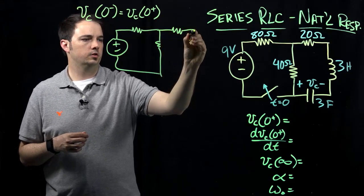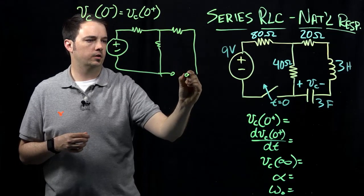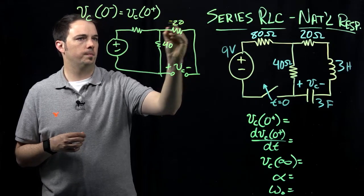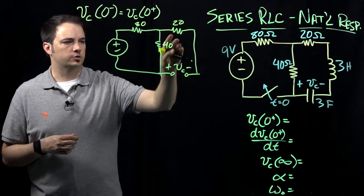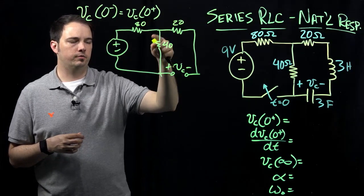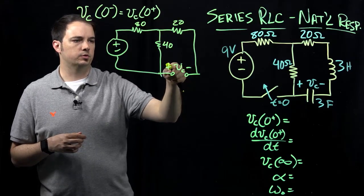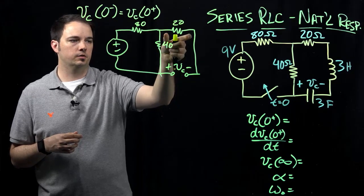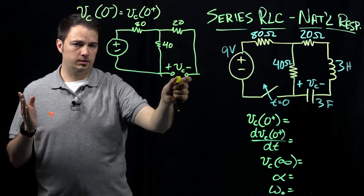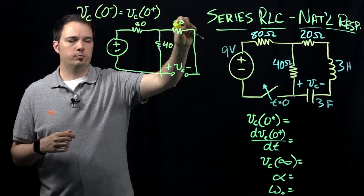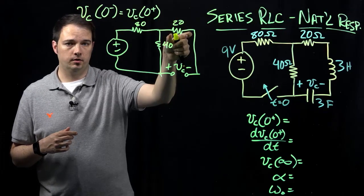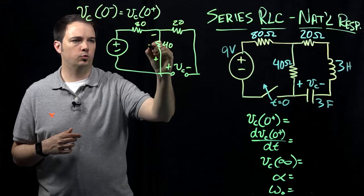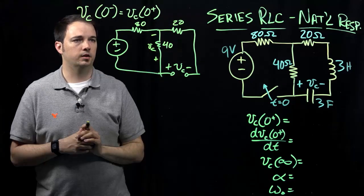If I redraw the circuit in that steady-state configuration, we have the resistors still in play with plus minus VC indicated. We have a 40-ohm resistor, a 20-ohm, and an 80-ohm. If we evaluate a KVL loop, VC would have to equal the voltage across the 40-ohm resistor, because the capacitor is acting as an open circuit. At steady state there can be no current flow through the 20-ohm resistor, so there's no voltage drop there, meaning this voltage has to equal the voltage across the 40-ohm resistor.